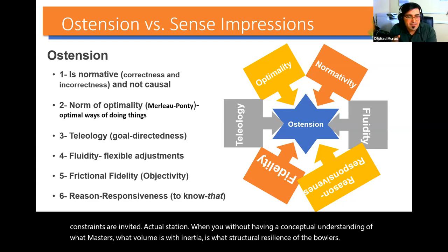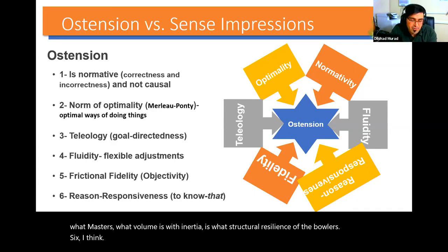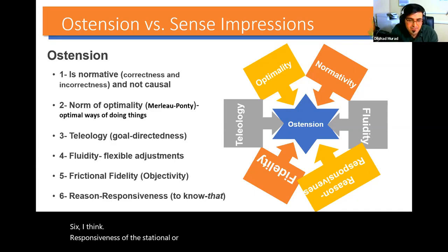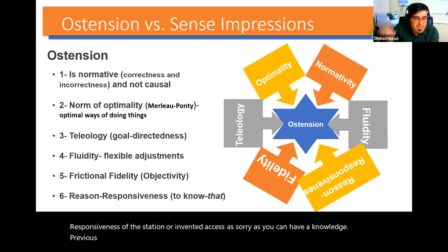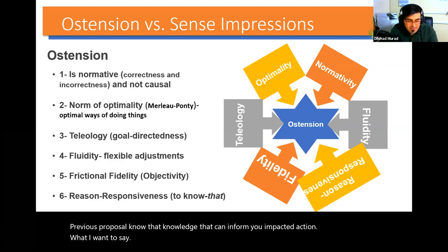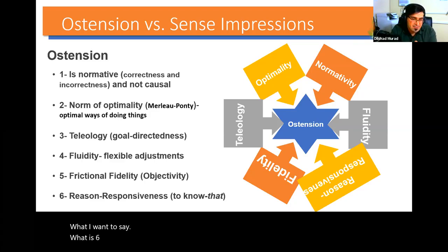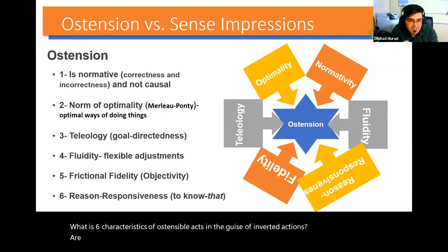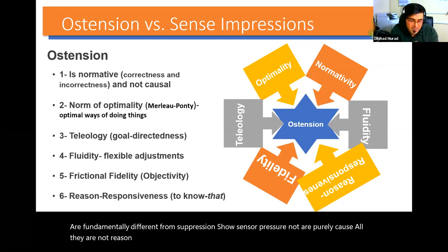Sixth, the reason-responsiveness of ostension or embedded acts is obvious. You can have previous propositional knowledge that can inform your embedded action. What I want to say is that these six characteristics of ostensive acts in the guise of embedded actions are fundamentally different from sense impressions. Sense impressions are purely causal; they are not reason-responsive. So when Carnap confuses ostension with causal regularities, I think it is a fundamental mistake on his part.